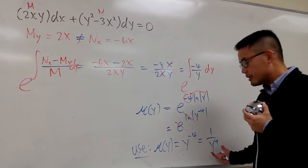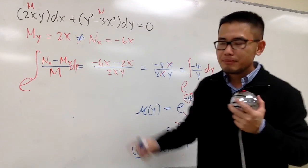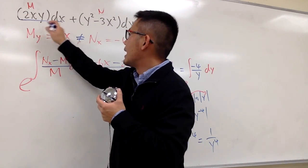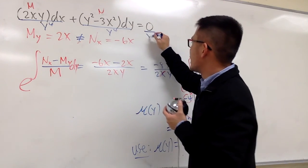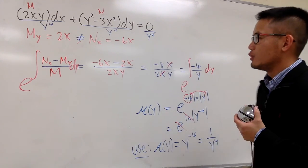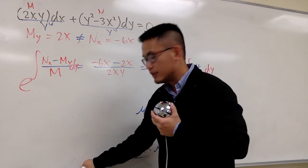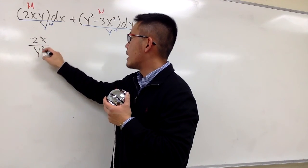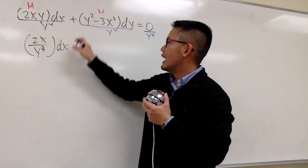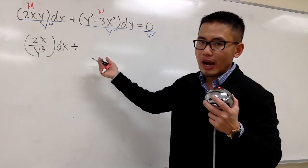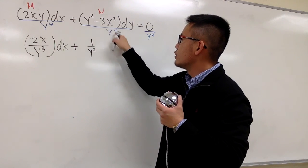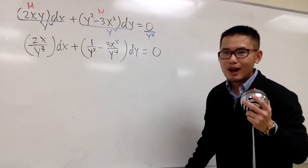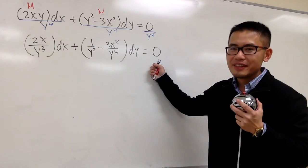That means I will take the original equation and multiply everything by 1 over y to the 4th power — equivalently, divide each term by y to the 4th. This is the crucial step needed to make the equation exact. Now: 2xy over y to the 4th gives 2x over y to the 3rd — put dx on the side. Then y squared over y to the 4th is 1 over y squared, and minus 3x squared over y to the 4th. This is definitely exact.